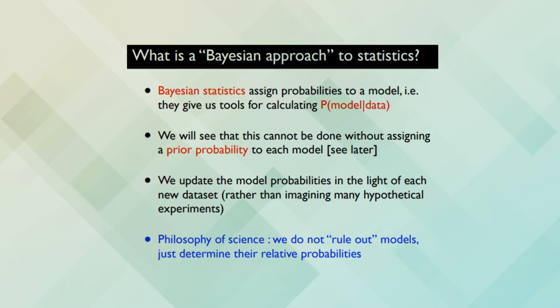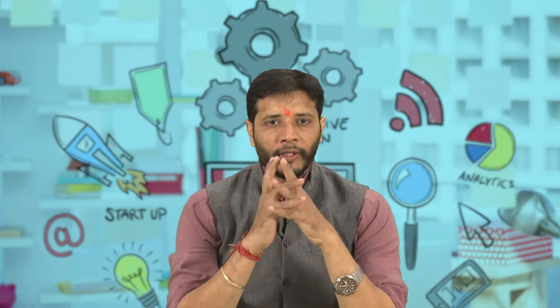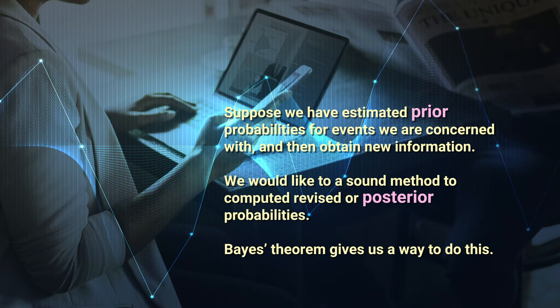Bayesian statistics assigns probabilities to a model, giving us tools for calculating the probability of a model with respect to data. This cannot be done without assigning a prior probability to each model. We update the model probabilities in the light of each data set rather than imagining many hypothetical experiments. In the philosophy of science, we do not rule out models but instead determine their relative probabilities. Bayes' theorem gives us a way to compute revised or posterior probabilities.